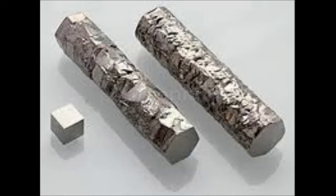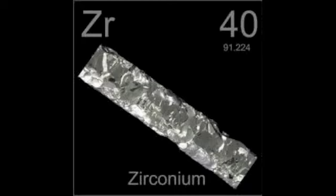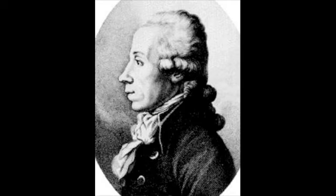Zirconium. Let's start with the properties of zirconium. Zirconium is a transition metal and therefore does not have any valence electrons. Its melting point is at 1855 degrees Celsius and its boiling point is at 4409 degrees Celsius. This illustrious grayish white element is a soft solid at room temperature. It was discovered in 1789 by a